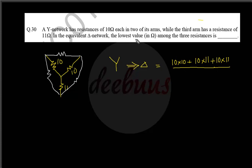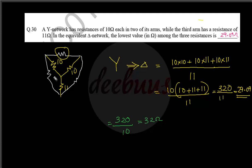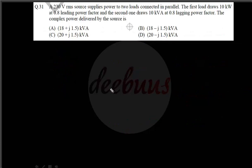The lowest value occurs when dividing by the largest resistance, which is 11 ohm. Taking 10 common from the numerator: 10×(10 plus 11 plus 11) divided by 11, giving 10×32 divided by 11 equal to 320/11, approximately 29.09 ohm. The other two delta resistances are both 320/10 equal to 32 ohm each. The lowest value is 29.09 ohm.